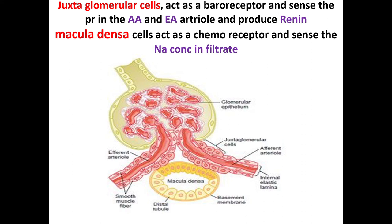Angiotensin 1 passes through the lungs and is converted into angiotensin 2. Angiotensin 2 has a vasoconstrictive effect, but with preference given to the efferent arteriole. So the efferent arteriole is constricted more. The book guidance says the afferent is dilated, but this is debatable.